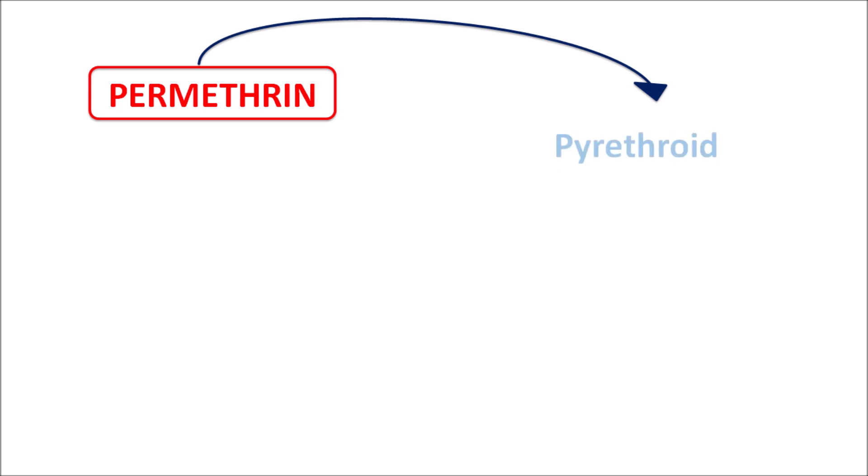Today in this video let us discuss permethrin. This drug acts as a pesticide or insecticide, and this compound belongs to the chemical category of pyrethroids. These are a group of compounds, among which permethrin is one of the insecticides.